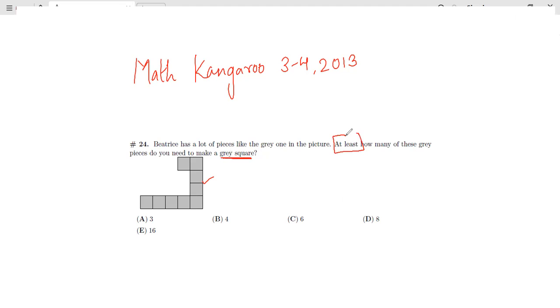We need to make a gray square and they're talking about the least number of pieces that we need to make a square. Now what are the number of squares in this piece? You have nine squares and we need to make a full gray square.